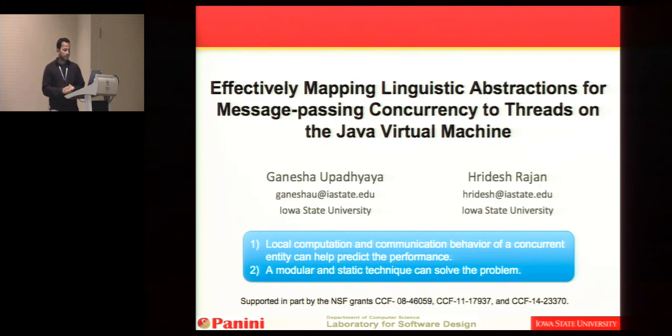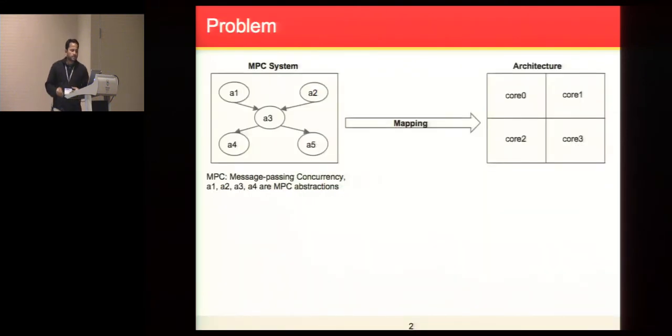In this talk, we have two key takeaway points. First, local computation and communication behaviors of concurrent entities can help predict performance, and we can have a modular and static technique for solving this problem. To illustrate the problem, consider a message passing system that contains a number of concurrently running entities that communicate only via message passing. Given that system, how do we map the concurrent entities to underlying architecture that contains multiple cores?